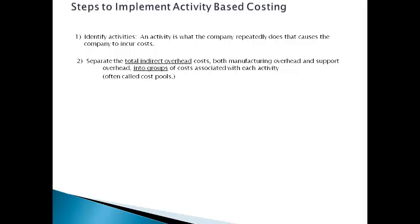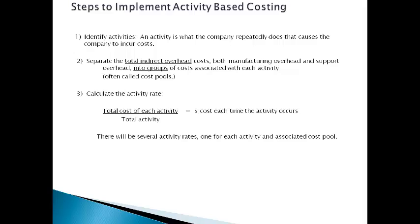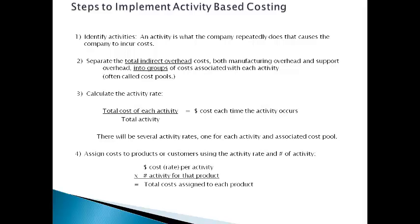Let's talk through the steps required to allocate costs using activity-based costing. The first step is to identify the activities that occur repeatedly to make and support the product. Next, sort all the fixed overhead costs, both product and period, into cost pools related to the activities. Third, divide the total cost for each cost pool by the activity related to these costs to get a cost each time the activity occurs. Then use the cost per activity to assign cost to each product. Finally, divide total costs by total units to get the support cost per unit for each product.